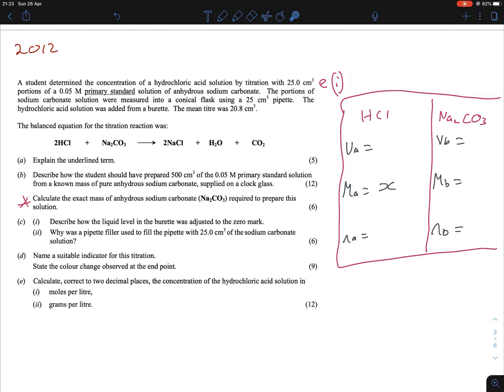Let's have a look at what we're given. A student determined, if we're reading up here, the concentration of HCl by titration with 25 ml portions of 0.05 of the anhydrous sodium carbonate. So we know two things for that. First off, that there's 25 ml, and secondly, we know the molarity of it, 0.05.